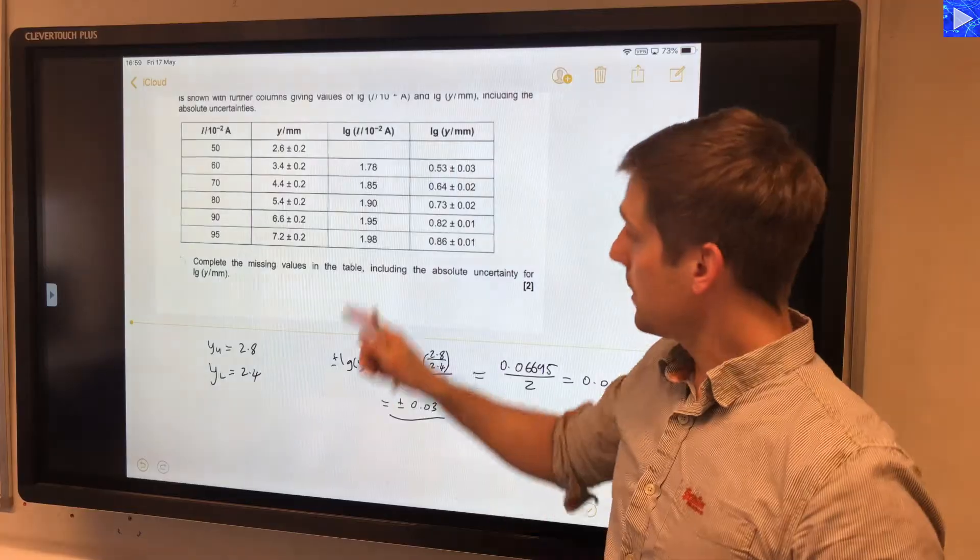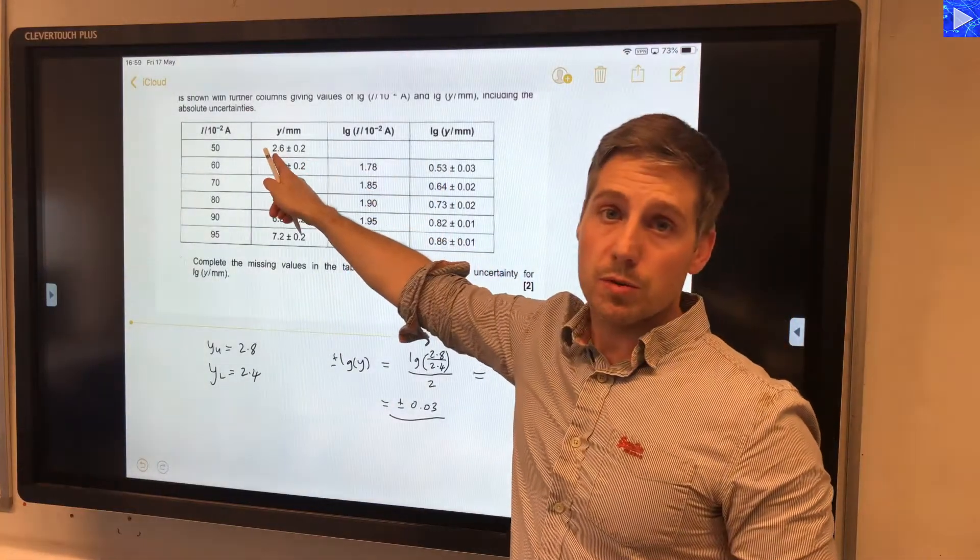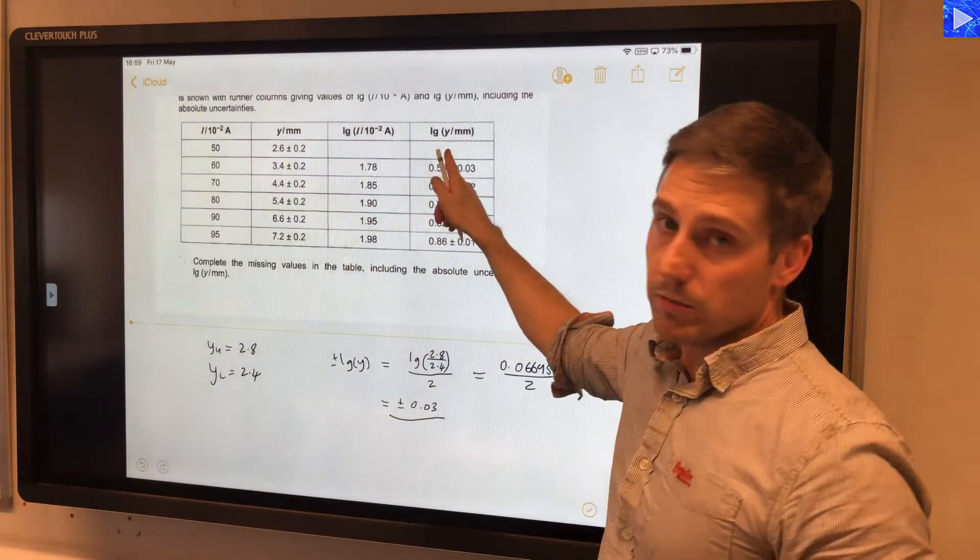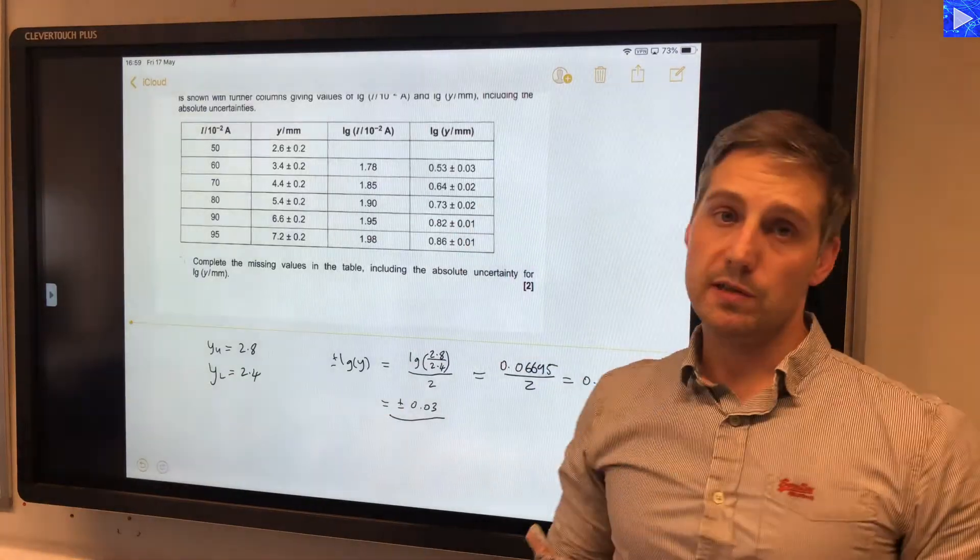So to fill in the table here, you take the log of 2.6, write that value in here, and then it's plus or minus 0.03.